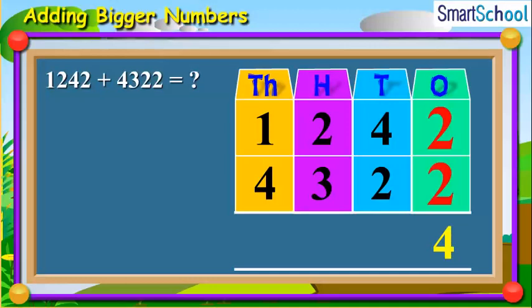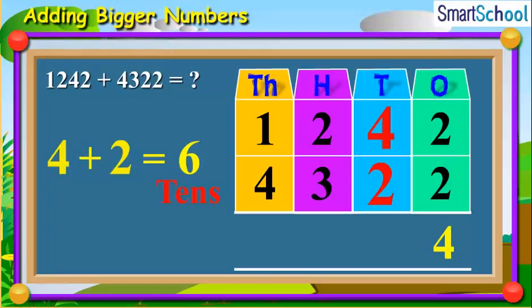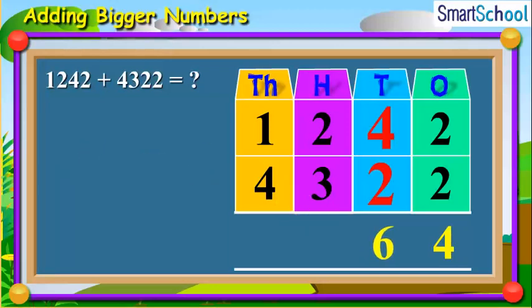Now, add the tens together, which will be 4 plus 2 is equal to 6 tens. Now, place 6 at the tens place.